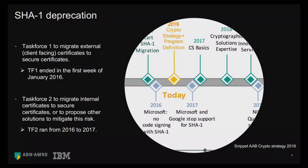The lesson from SHA-1 migration: as organizations become more autonomous and let teams become more autonomous, it's extremely important that the central team still knows where all the different instances of cryptography are. When you want to migrate away from something — whether certificates or anything else — having the inventory makes a huge difference.